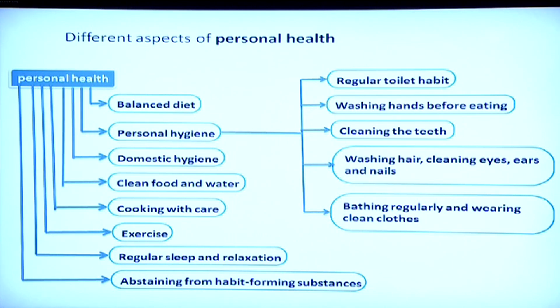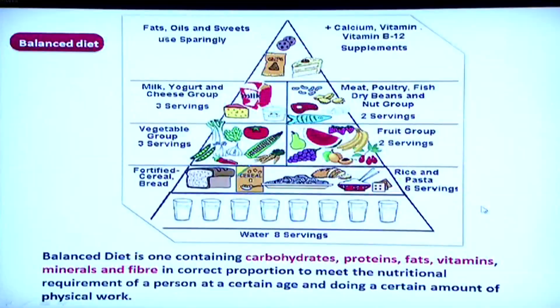Personal hygiene in detail includes regular bathing, regular toilet habits, cleaning teeth, washing hair, and bathing at regular intervals. Regarding balanced diet: a balanced diet is one that contains carbohydrates, proteins, fats, vitamins, minerals, and fibers in the correct proportion to meet the nutritional requirements of a person at a given age and doing a certain amount of physical work. Therefore it varies from person to person.